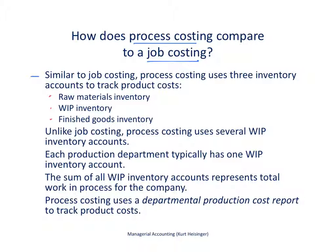However, unlike job costing, process costing uses several work in process inventory accounts — one account for each production department. We'll be looking at an example of a company that has two production departments: an assembly department and a finishing department. In that scenario, the company will have two separate work in process inventory accounts. It could be a company with five, six, or ten different production departments, in which case each department would have its own work in process inventory account.